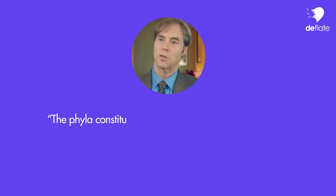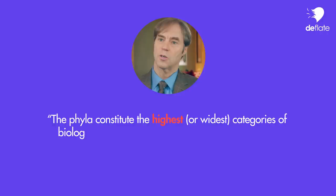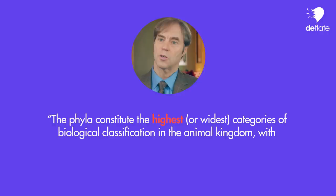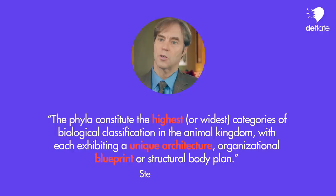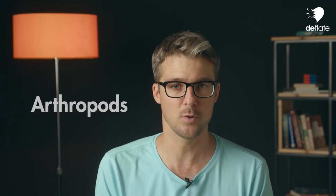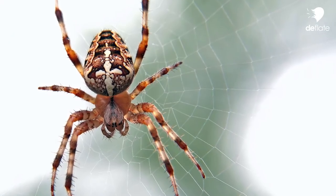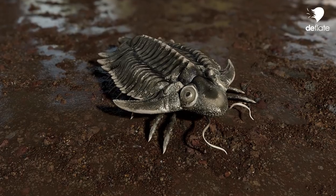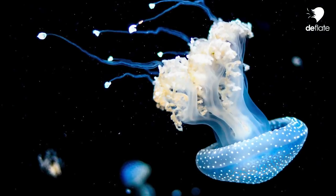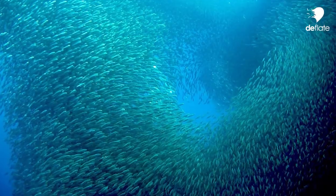Recall from my first video that a wide variety of animals representing as many as 20 different phyla pop up suddenly in the Cambrian era. The phyla constitute the highest or widest categories of biological classification in the animal kingdom, with each exhibiting a unique architecture, organizational blueprint or structural body plan. For example, the phylum of arthropods includes all insects, all spiders, all types of crabs, lobsters, as well as the trilobites. The phylum of cnidarians includes corals, jellyfish and sea anemones. And the phylum of chordates includes all birds, reptiles, fish and mammals.